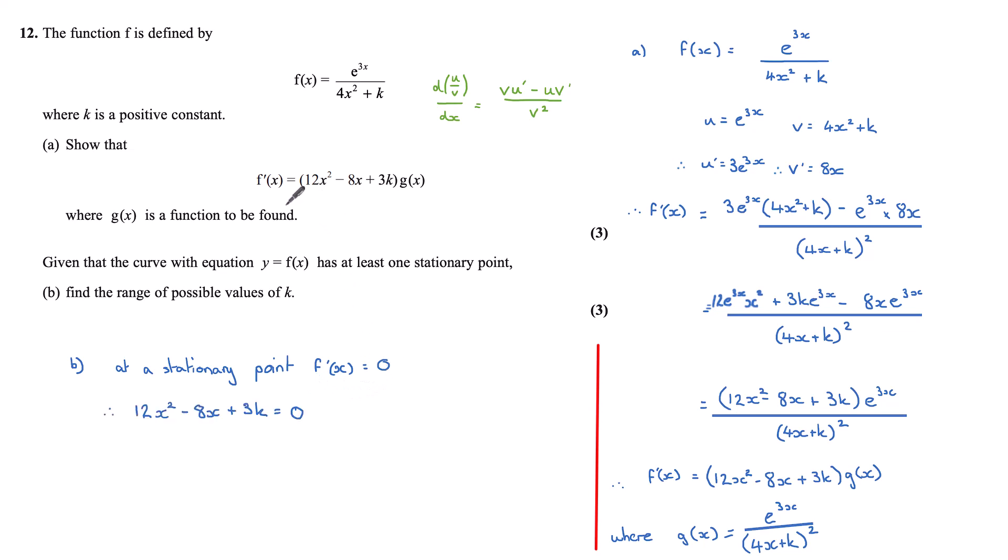This means that our 12x² - 8x + 3k must be equal to zero. And that's because our g(x) function in this case is equal to e^(3x) over (4x² + k)², which will always have a positive value. So this will never equal zero.